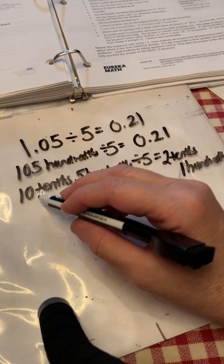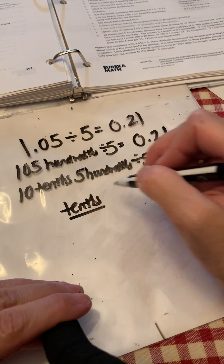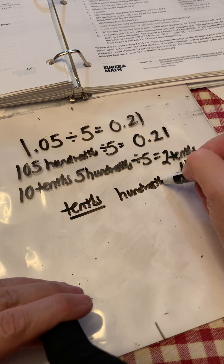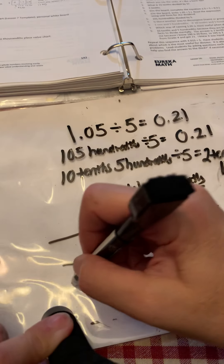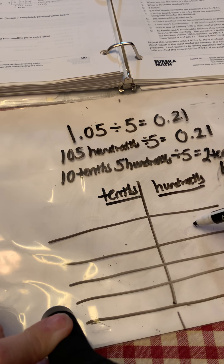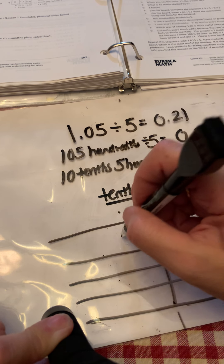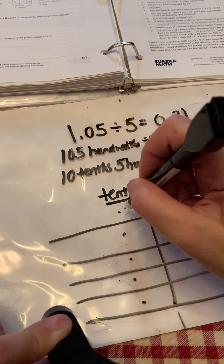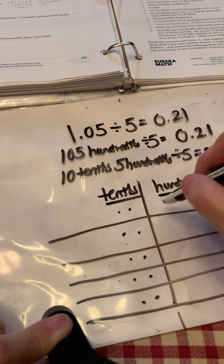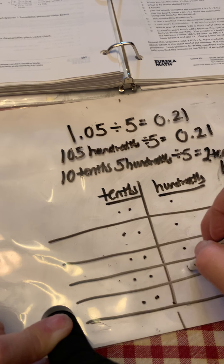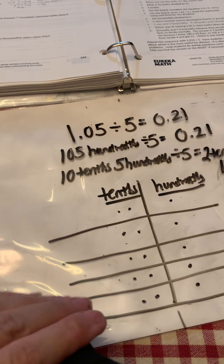I could also do this problem in a place value chart with tenths and hundredths columns. I divide into 5 groups: 10 tenths divided by 5 gives 2 tenths per group, and 5 hundredths divided by 5 gives 1 hundredth per group. That gives me 2 tenths 1 hundredth in each of my groups.